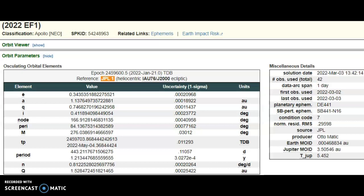All right, 2022 EF1. Solution date March 3rd, so they're saying that it was late yesterday when they actually announced it. I looked all day long and didn't see it announced. They said that they first saw it on March 2nd, actually solved it on March 3rd, but it still has a condition code of seven, meaning they're highly uncertain about its size and orbit. Strange folks, strange. How many observations? 42 over only one day. You think that they'd be able to actually...